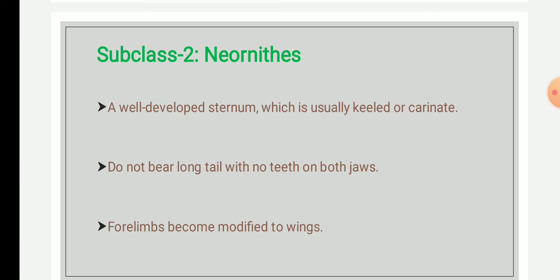The forelimbs are modified into wings. So this is the Neornithes subclass, in which both extinct and living birds are included.